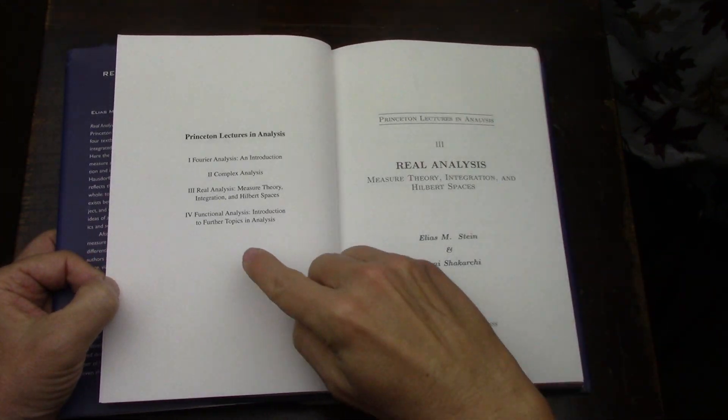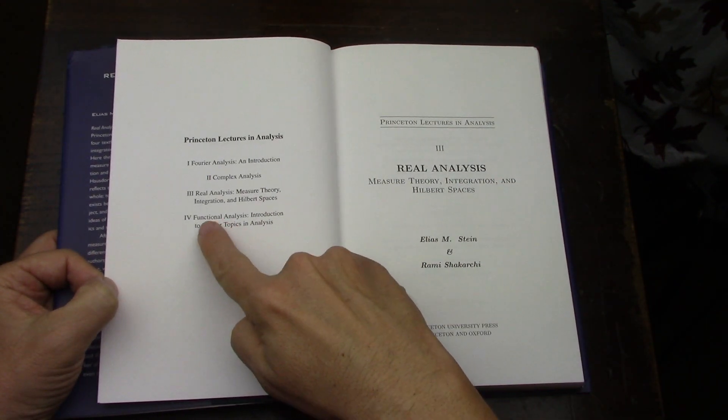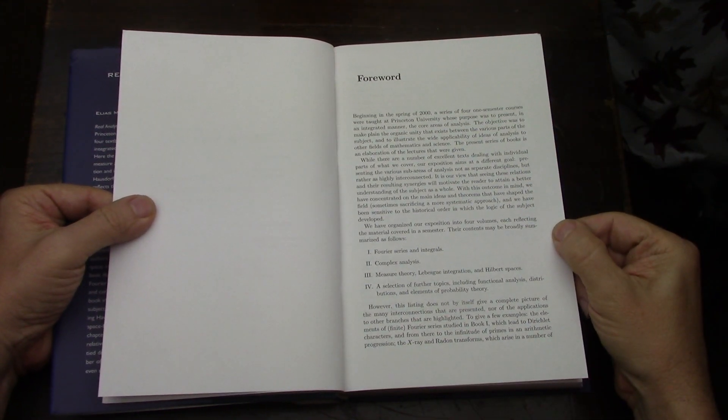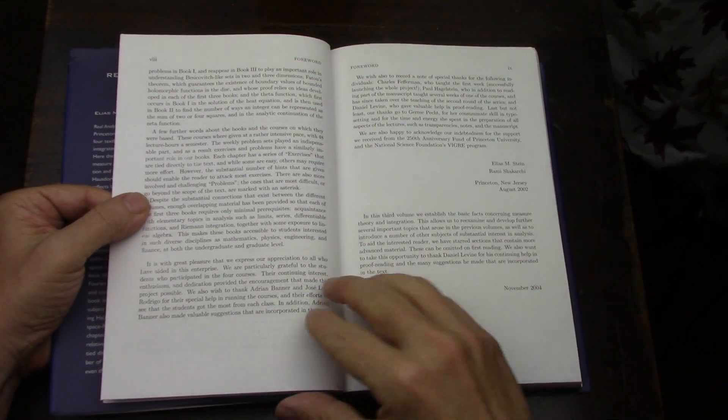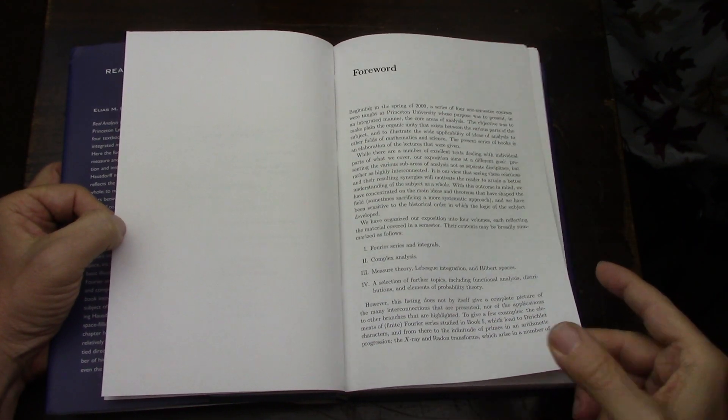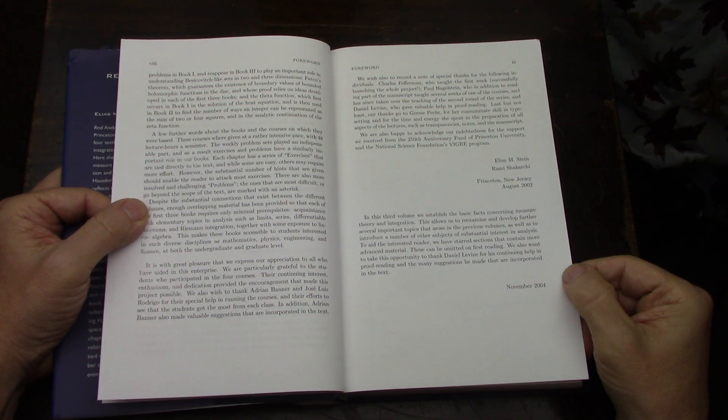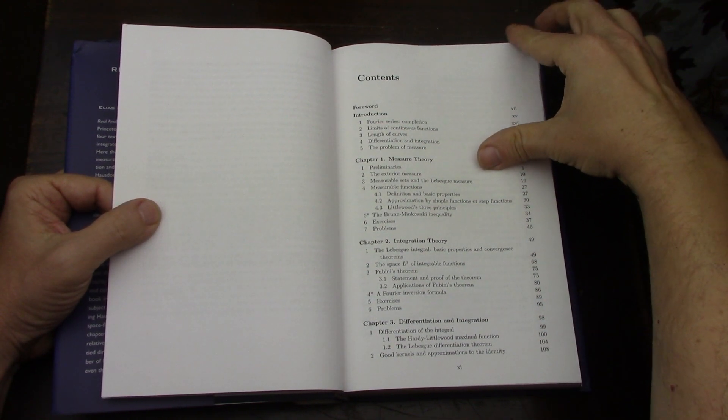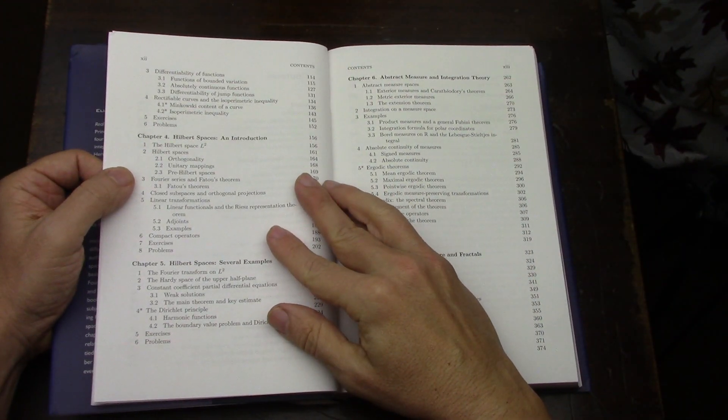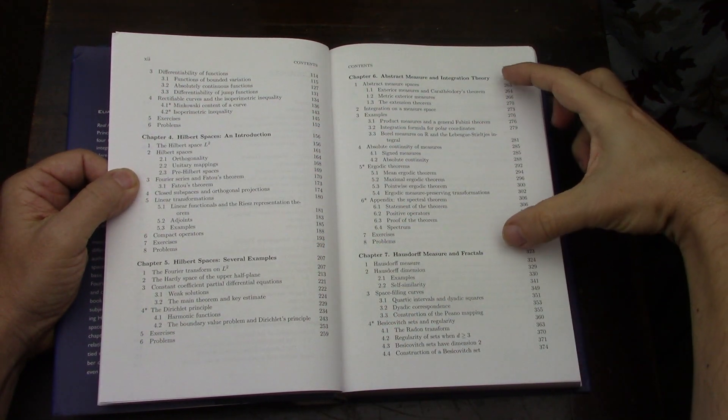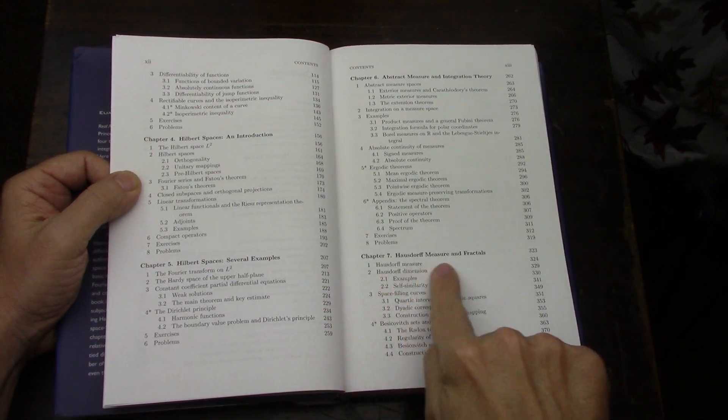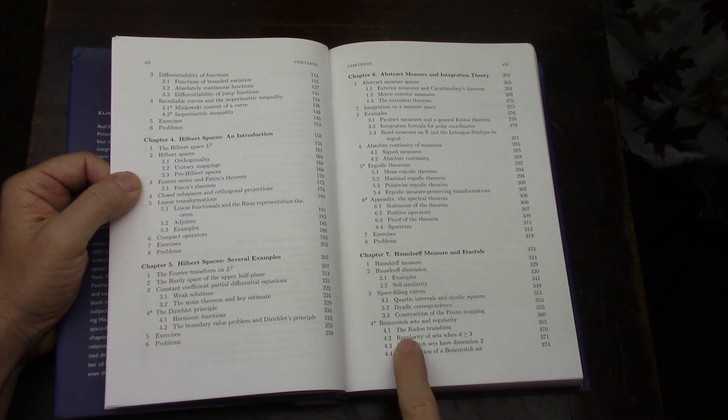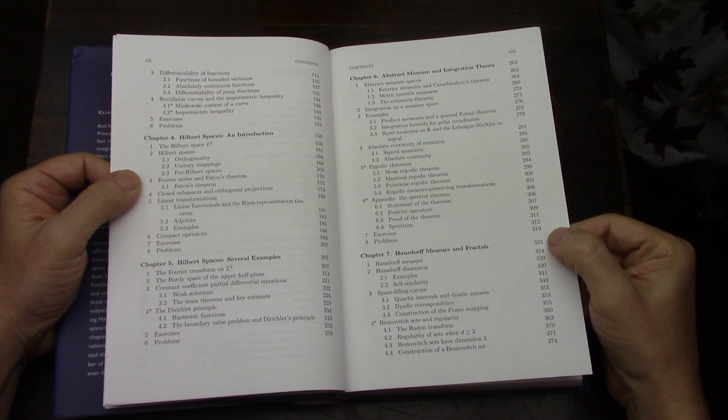All of these books—you can tell by the time they published this one they had already worked on the fourth. This is from 2005. I'll slow down so you can see and pause if you want to read the page. Topics include measure theory, integration, differentiation and integration, Hilbert spaces, abstract integration, measure and integration theory, fractals, the Radon transform. That gets a lot of play later on in the fourth volume.